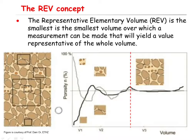Suppose you wanted to calculate the porosity of a porous medium. If you use this small window to calculate the porosity, depending on the place or location of your measurement, you will obtain a different value for the porosity. For example, if you place your window here, you will get a small value for the porosity, because most of this region is covered by the solid phase. If you plot the porosity versus the size of this window, this small value of the porosity will be somewhere here.